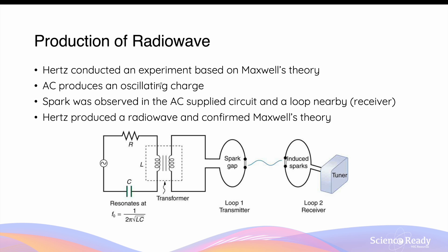One of these scientists, who was one of Maxwell's students at the time, was Hertz. Hertz conducted an experiment to verify Maxwell's theory. He used an AC power supply to produce an oscillating charge, that is electrons, in a circuit.